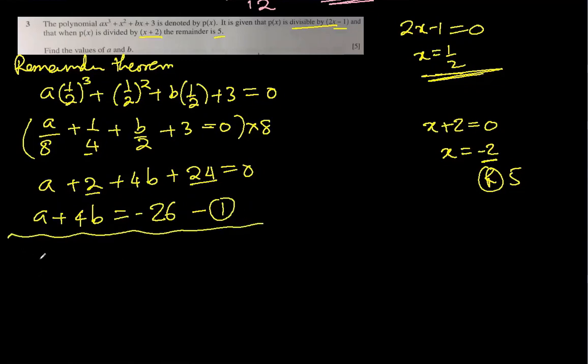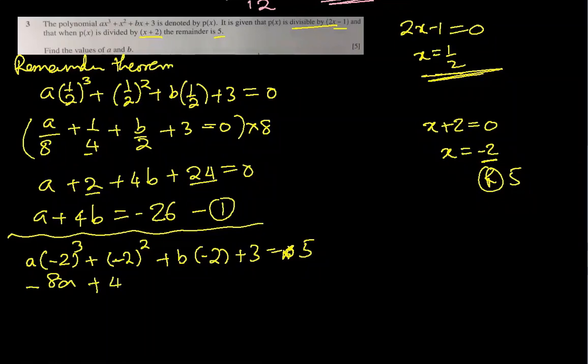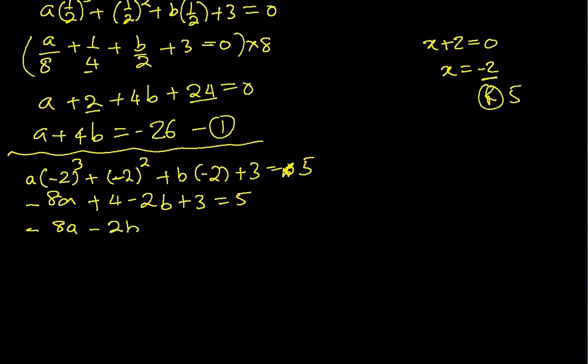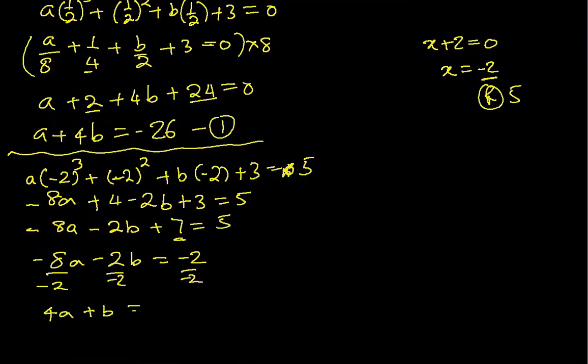Let's talk about the other one which is not a root. a(-2)³ plus (-2)² plus b(-2) plus 3 equal to 5, the remainder is 5. -8a plus 4 minus 2b plus 3 equal to 5. -8a minus 2b plus 7 equal to 5. If I bring this 7 to the right side, we get -8a minus 2b equal to -2. Let's divide whole equation by minus 2 because all of them are negative and even. So we get 4a plus b equal to 1.